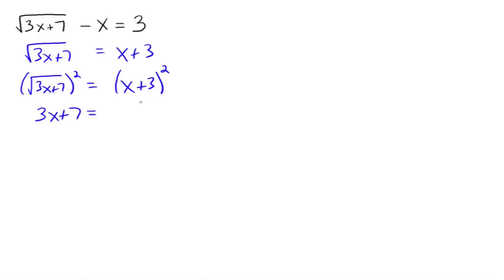Remember, this means x plus 3 times x plus 3. So you go off to the side, you FOIL that out, and you get x squared plus 6x plus 9. Then you say, what type of equation do I have? You've got a quadratic equation now. We've taken this radical equation and turned it into a quadratic equation.